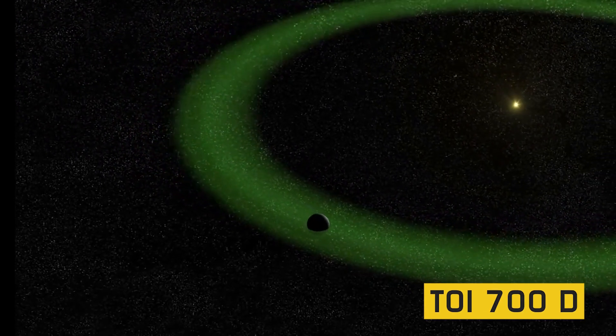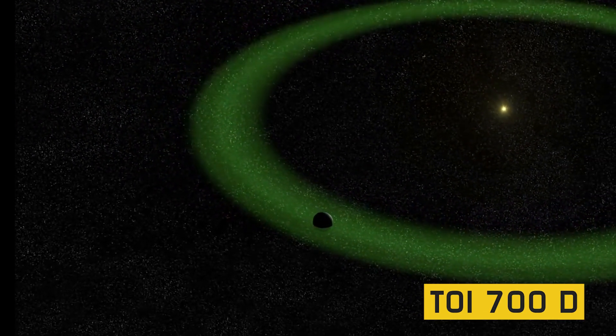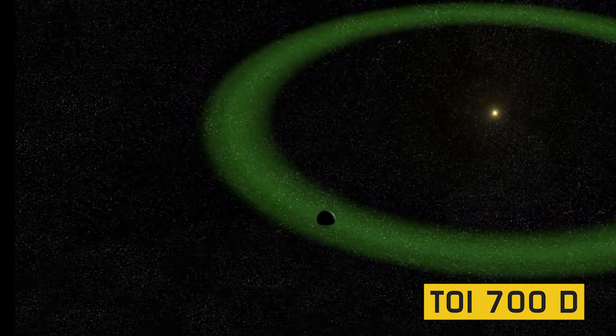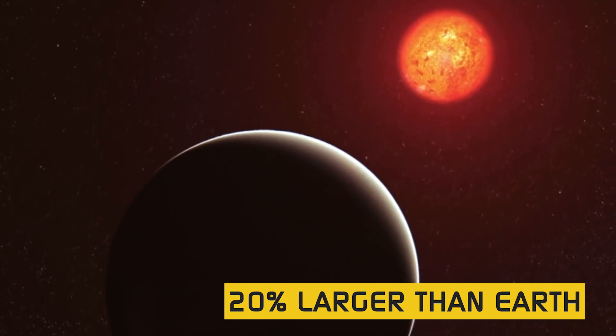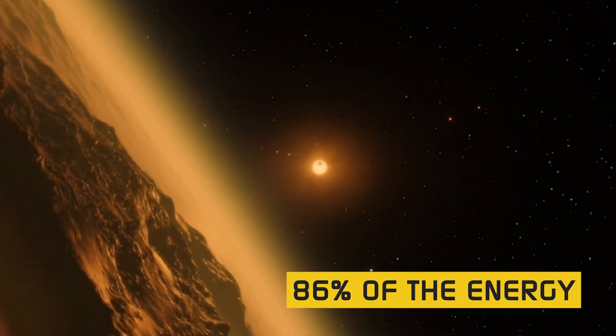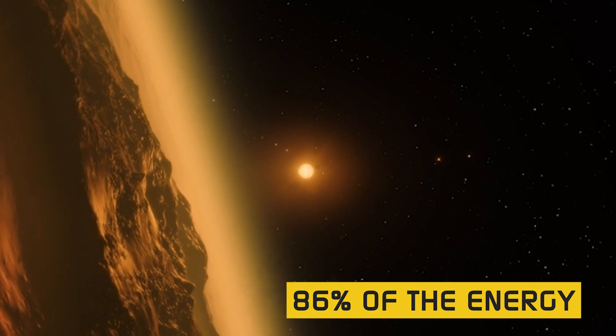But TOI 700D, the outermost known planet in the system, is the only one in the habitable zone. It measures 20% larger than Earth, orbits every 37 days, and receives from its star 86% of the energy that our sun provides Earth.